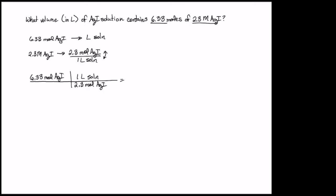Now I am ready to solve. This is multiplication and division and according to the rules of multiplication and division, your answer should have the same number of significant digits as the measurement with the fewest. 6.33 moles of AGI has 3 significant digits. The 1 liter of solution from the molarity is an exact number and therefore it has an unlimited number of significant digits. The 2.3 moles of AGI from the molarity has 2 significant digits.